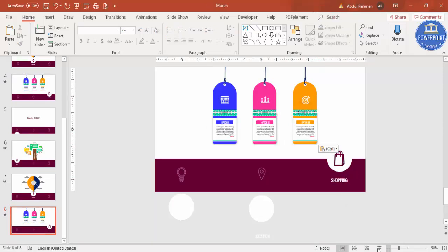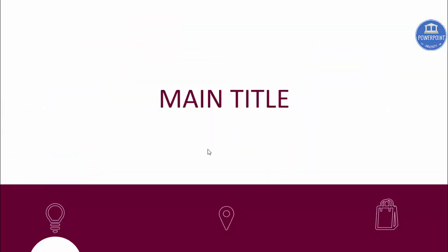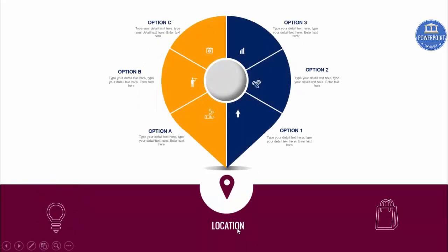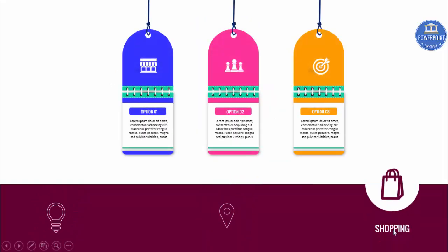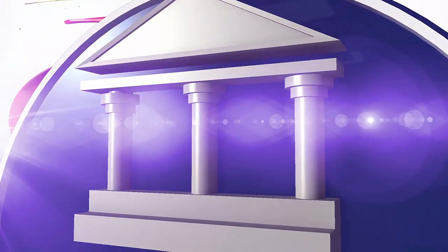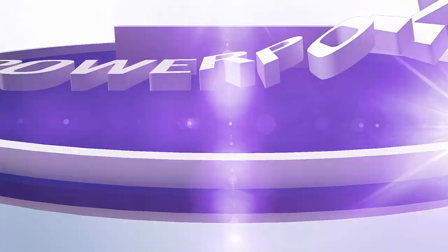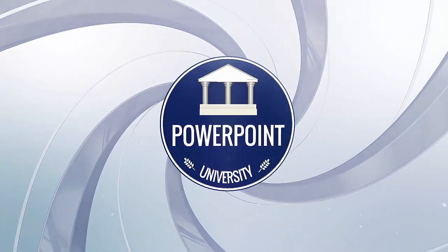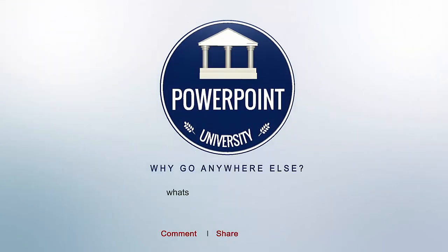Let's see how it looks in slideshow mode. This is the first slide with the main title and three icons. When I click, the first idea section comes with the image. Click again and the location appears. Click again and the shopping slide appears. You can add as many as you want — three, four, or five — and it's a great slide for teachers or students to showcase their projects. That's it — thank you for watching, don't forget to subscribe to PowerPoint University, see you soon!